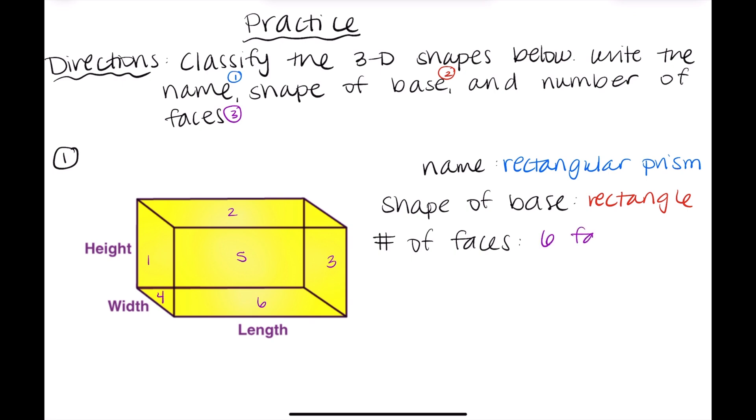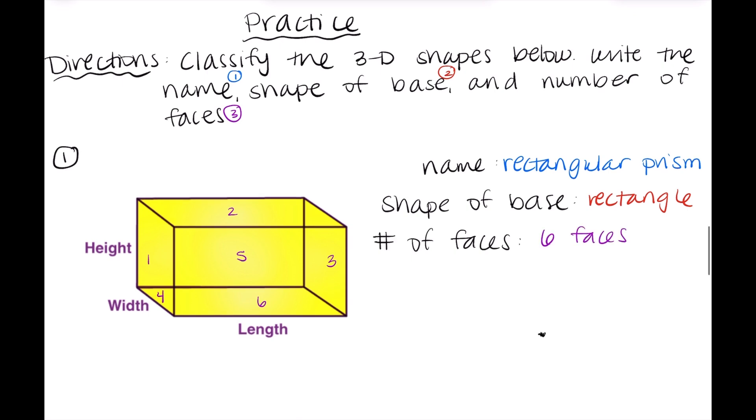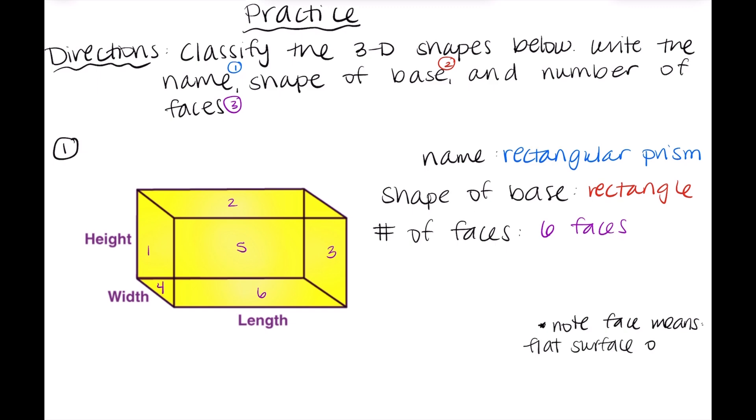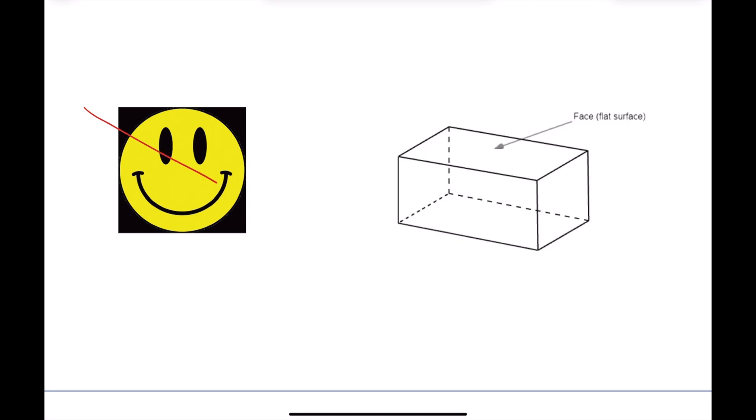And I know I haven't described what a face means yet, so I'll go ahead and write a note for you guys down here. All a face means is that it is a flat surface on the shape. So if I were to try to put this rectangular prism down on a table, I'd be able to do that on all six faces of the shape. So now that we know that the face of a shape is not a smiley face in this situation, it is the number of flat surfaces that the shape can be placed on.